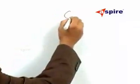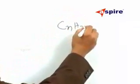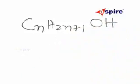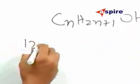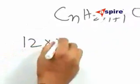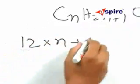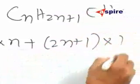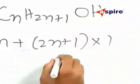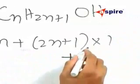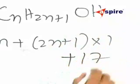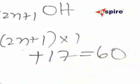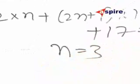Now, the general formula of the alcohol can be written as CnH2n+1OH. Now, 12 into n plus 2n plus 1 into 1 plus, for OH, the mass is going to be 17. This total is going to be 60. Solving, we get n is equal to 3.